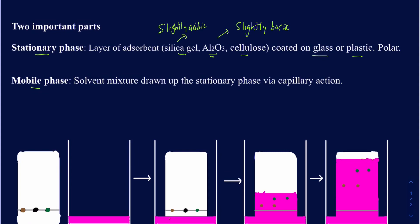In those cases, you want to use the slightly basic alumina as your stationary phase. Similarly, if you have a compound that's acidic in nature, it may not come out in alumina because alumina is basic and will hold onto that acidic compound stronger than neutral compounds. For the most part, when doing column chromatography or TLC, silica gel is most commonly used.